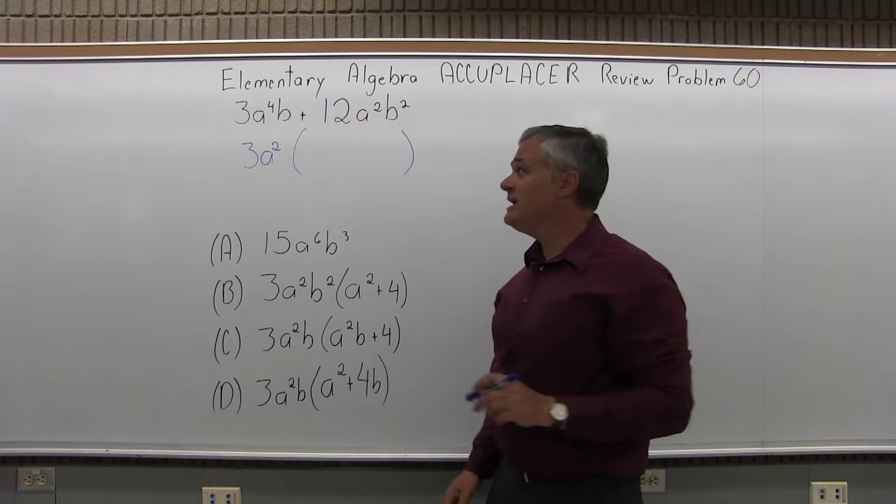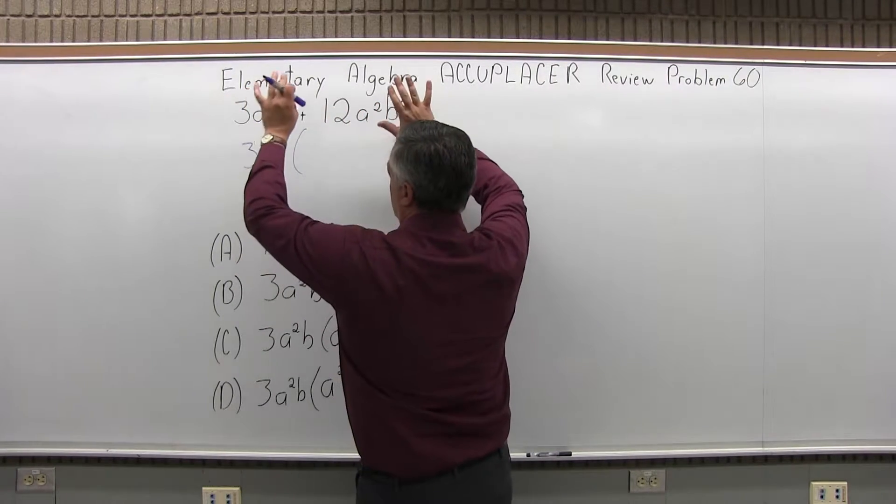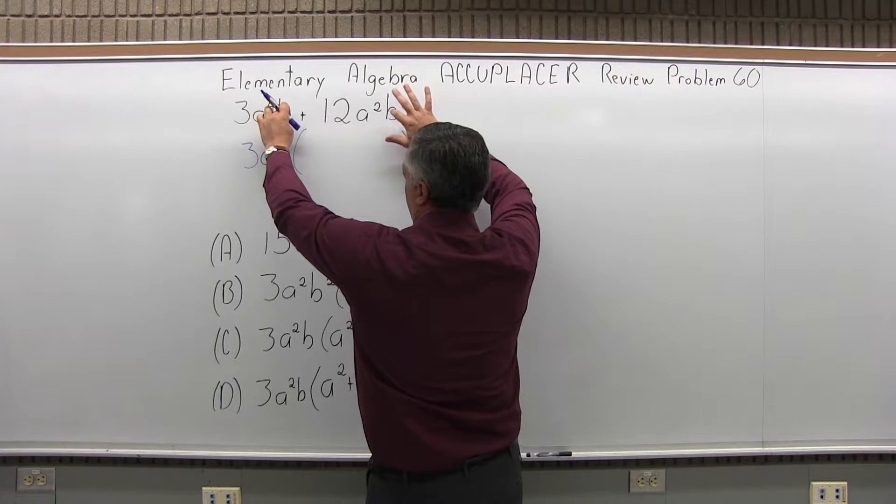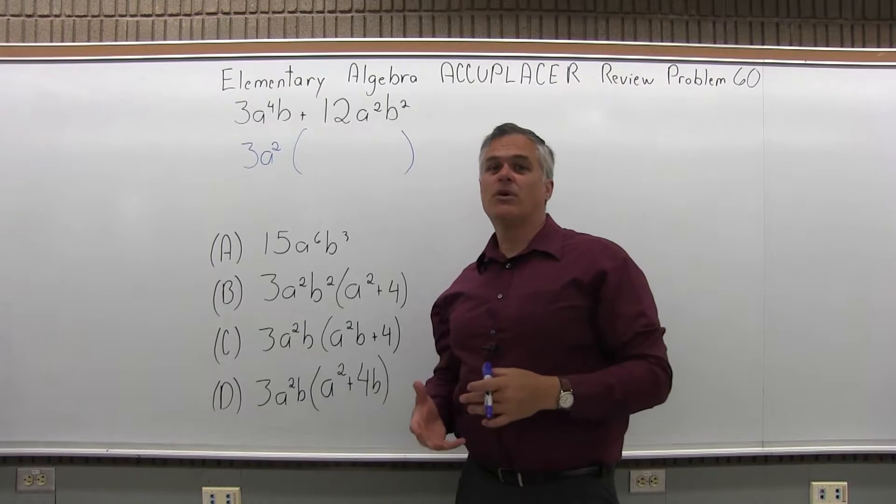And now the last variable, the B. Once I'm done with the numbers and the A's, forget about them. Just now look at the B. I have B in one of them and B to the second in the other. I want the biggest thing that can come out of both.